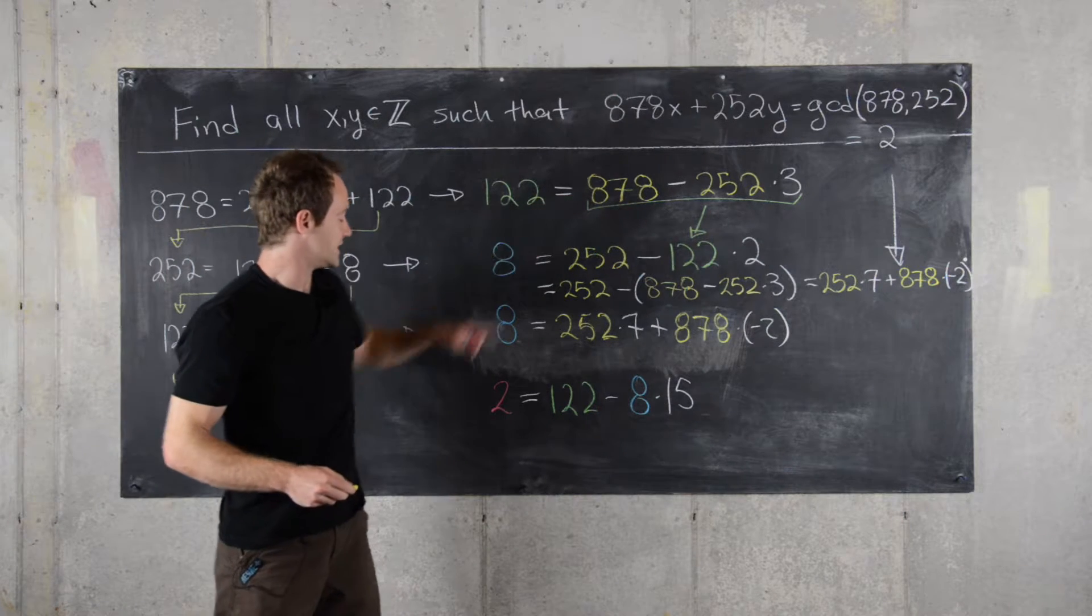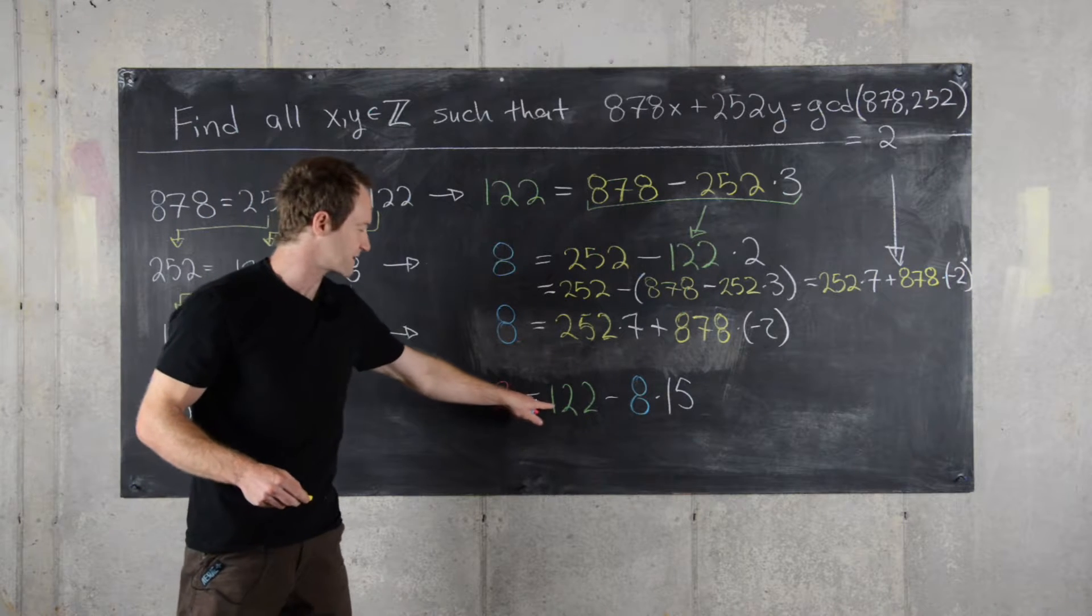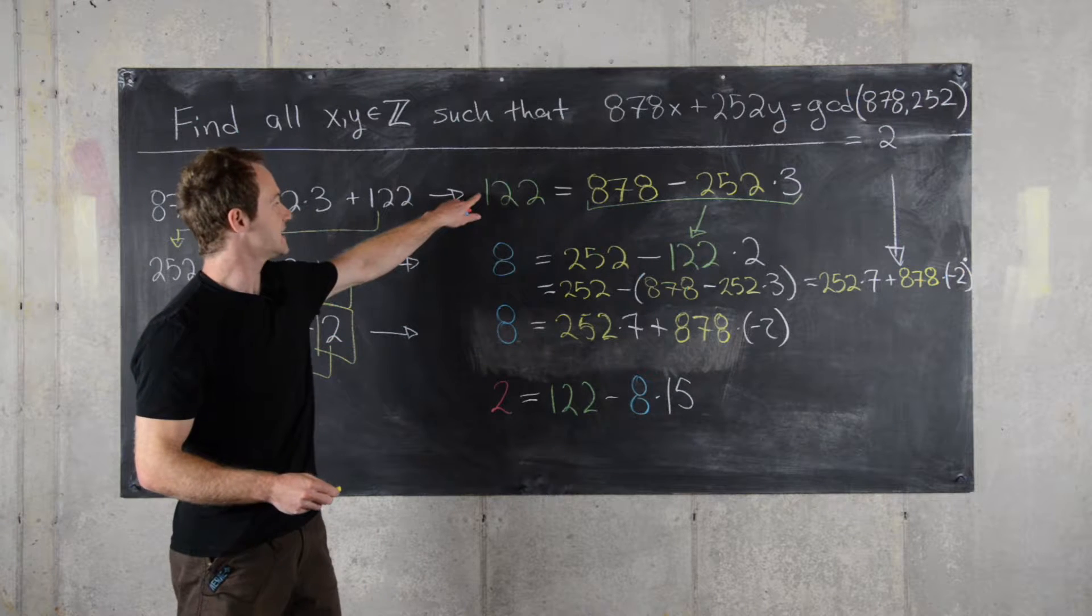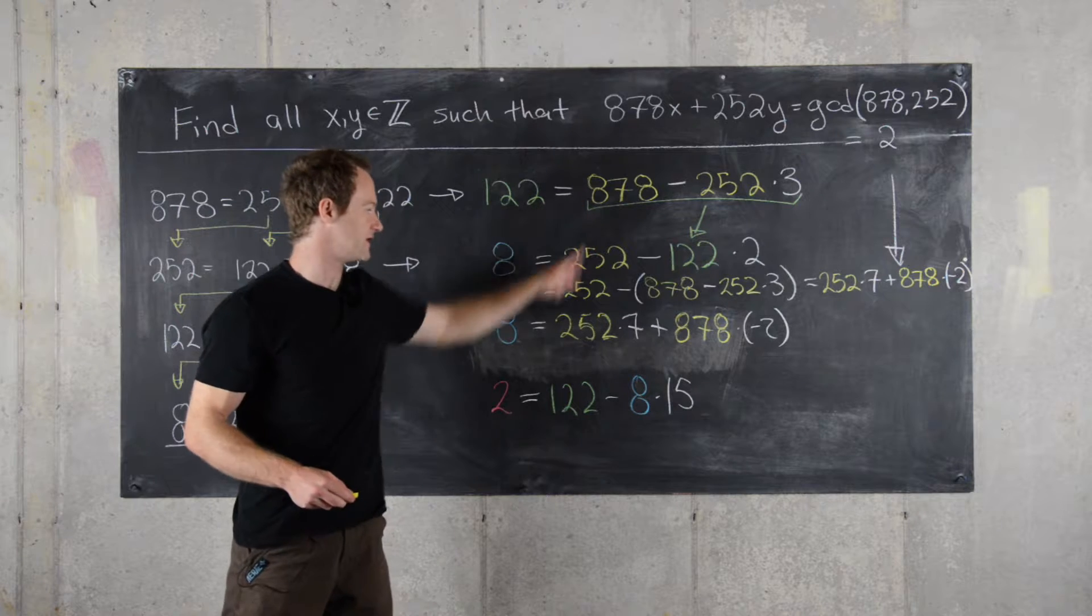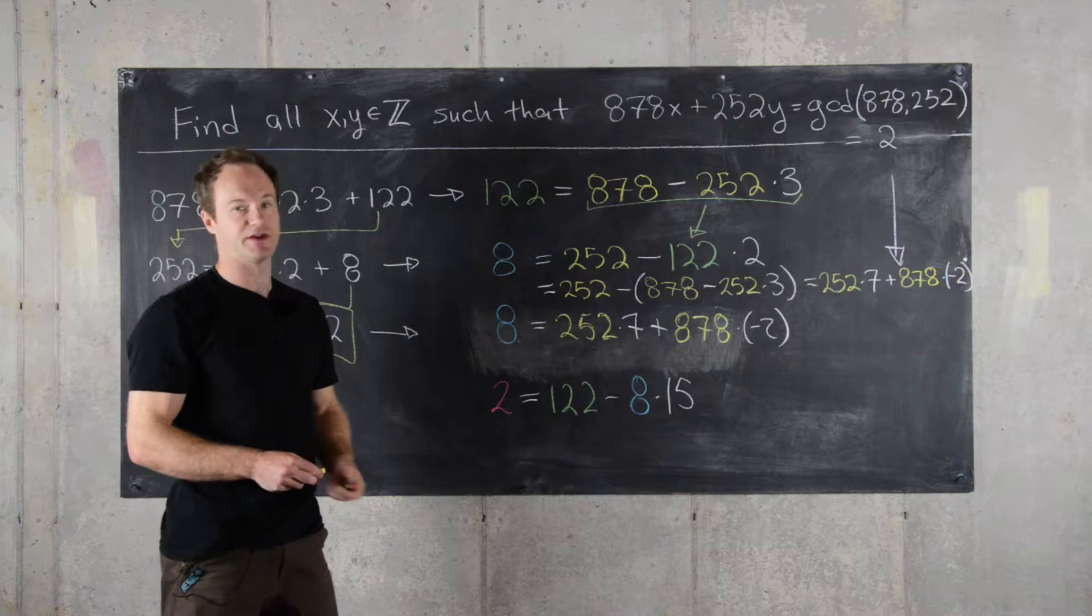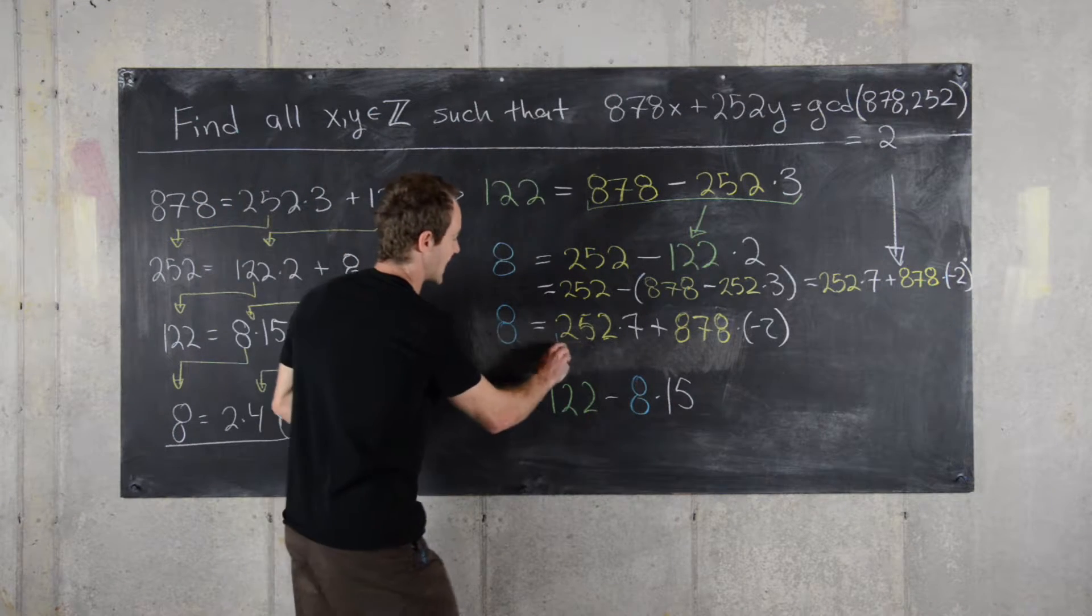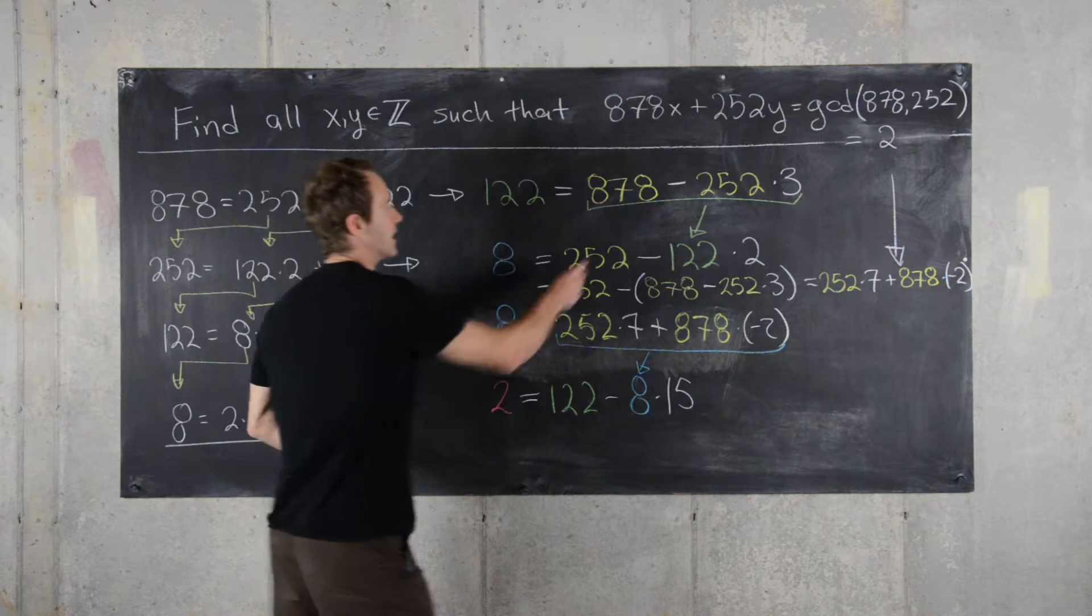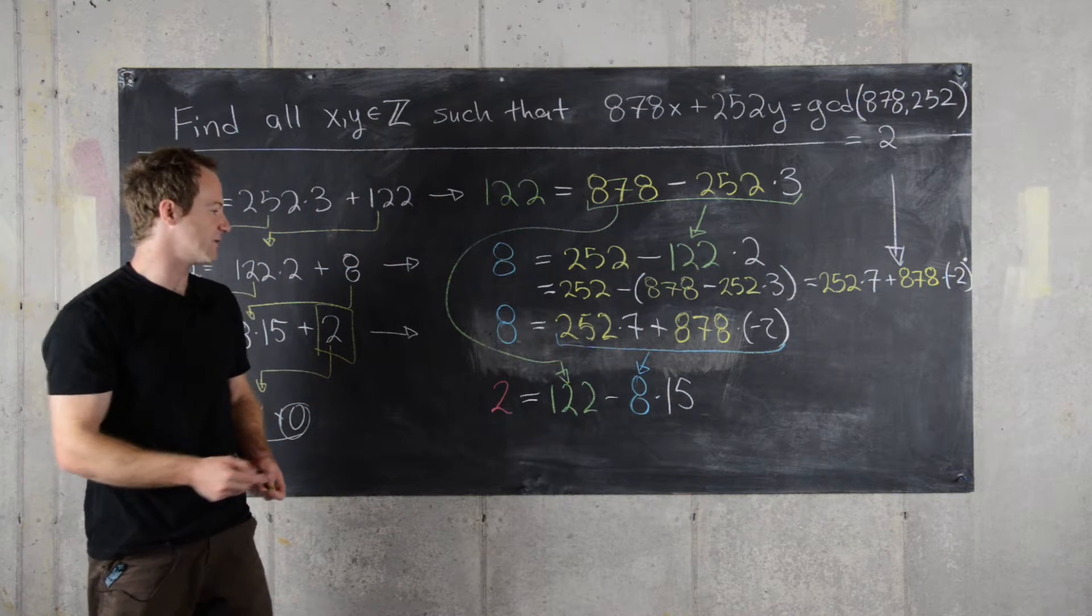So now what we can do is take this value of 2, which we've expressed as 122 minus 8 times 15, and now notice from this equation we have 122 expressed in terms of 878 and 252. So we can plug these in. We'll plug this value that we have for an expression for 8 in here, and we'll plug this expression for 122 in here.